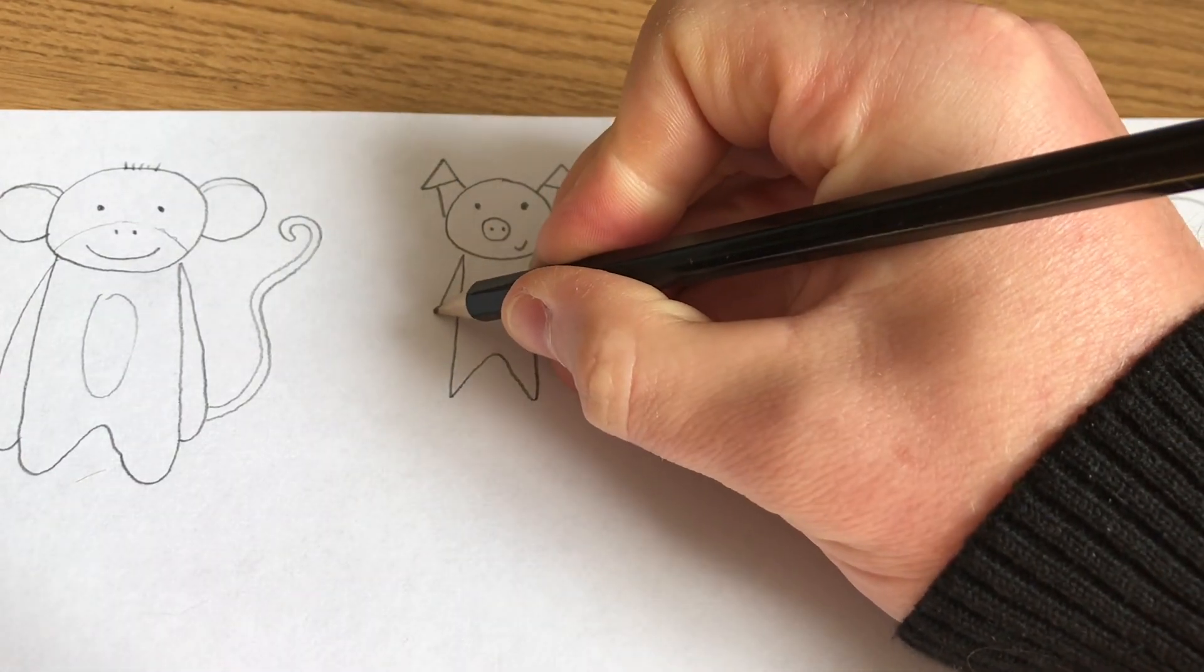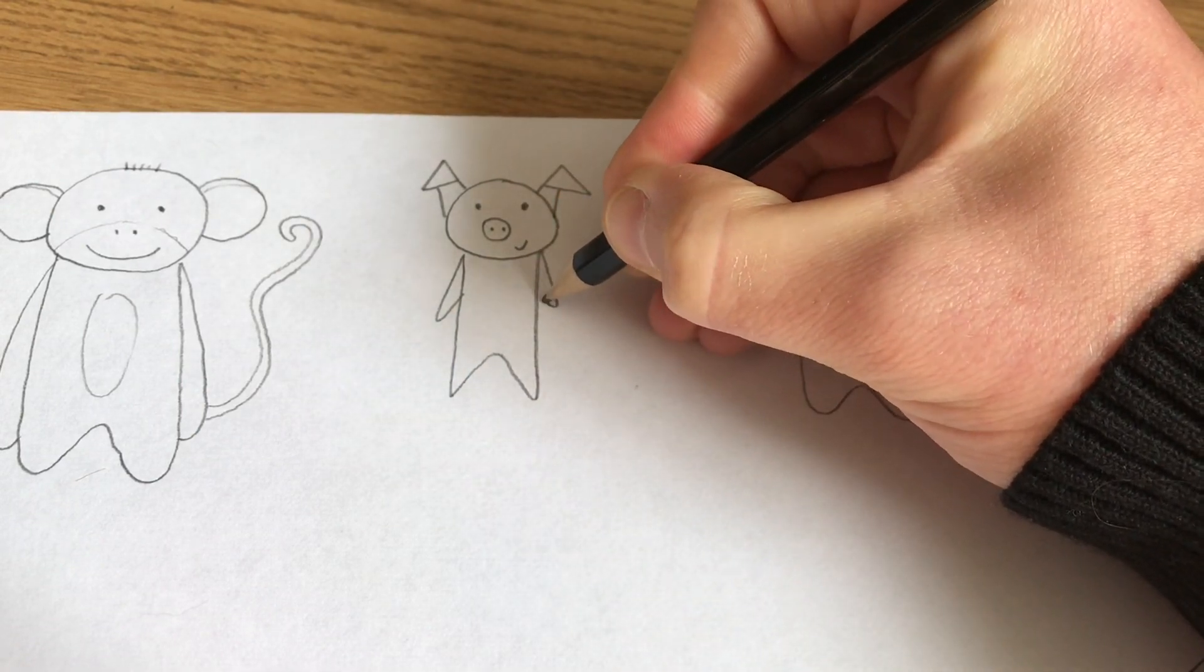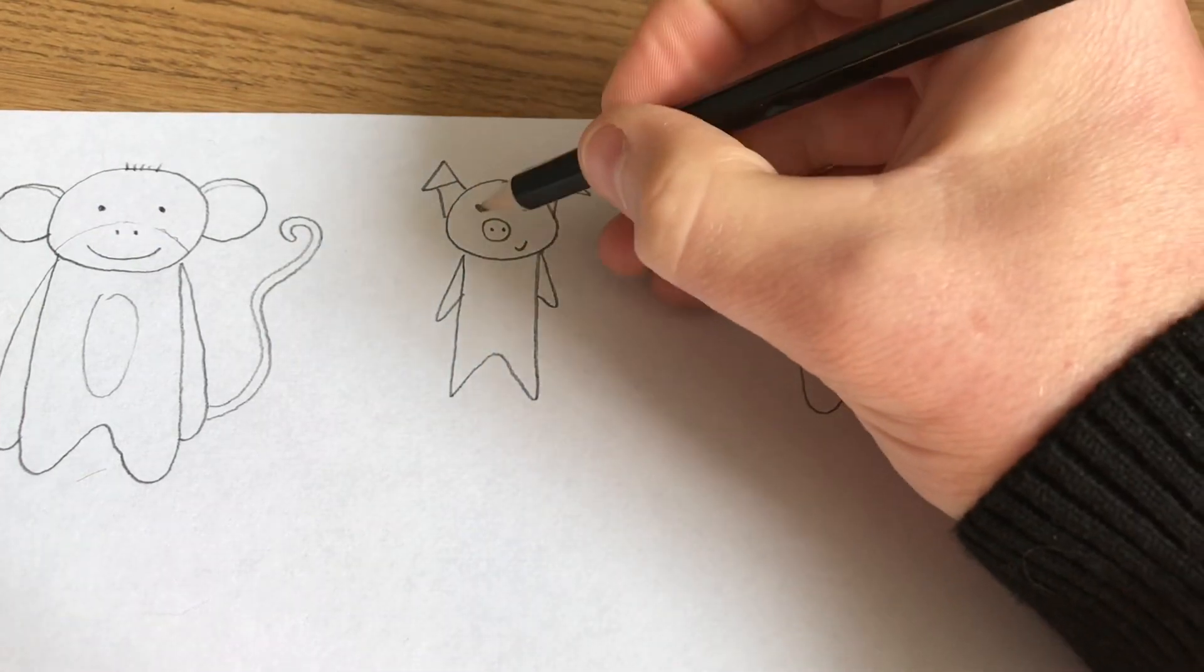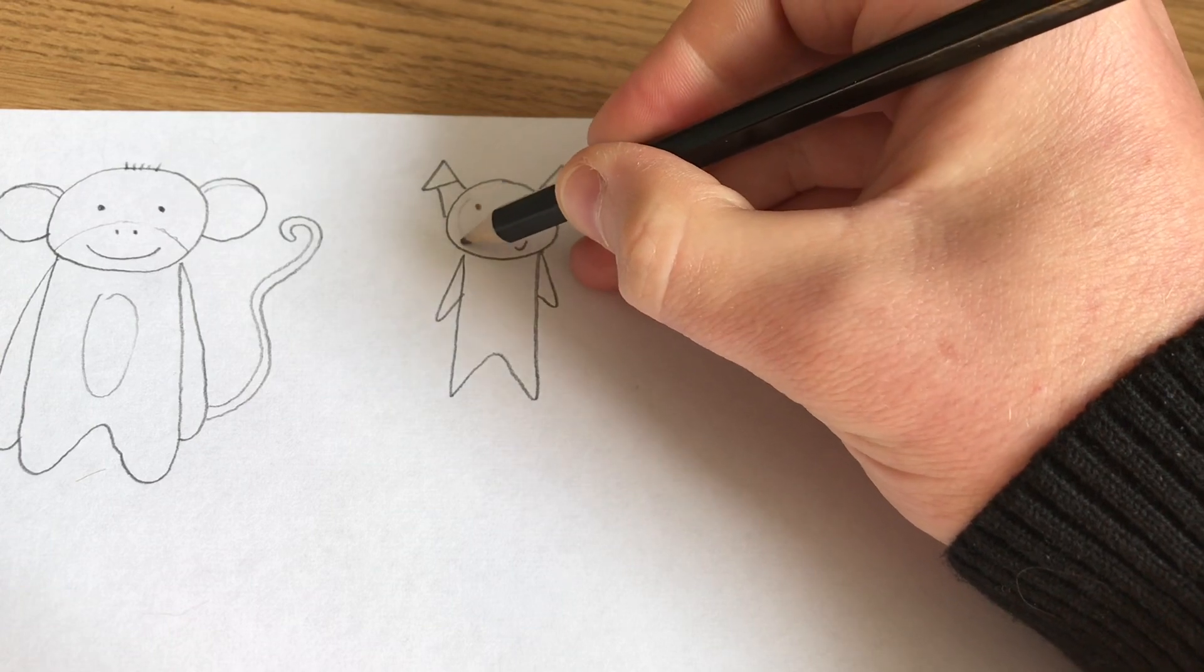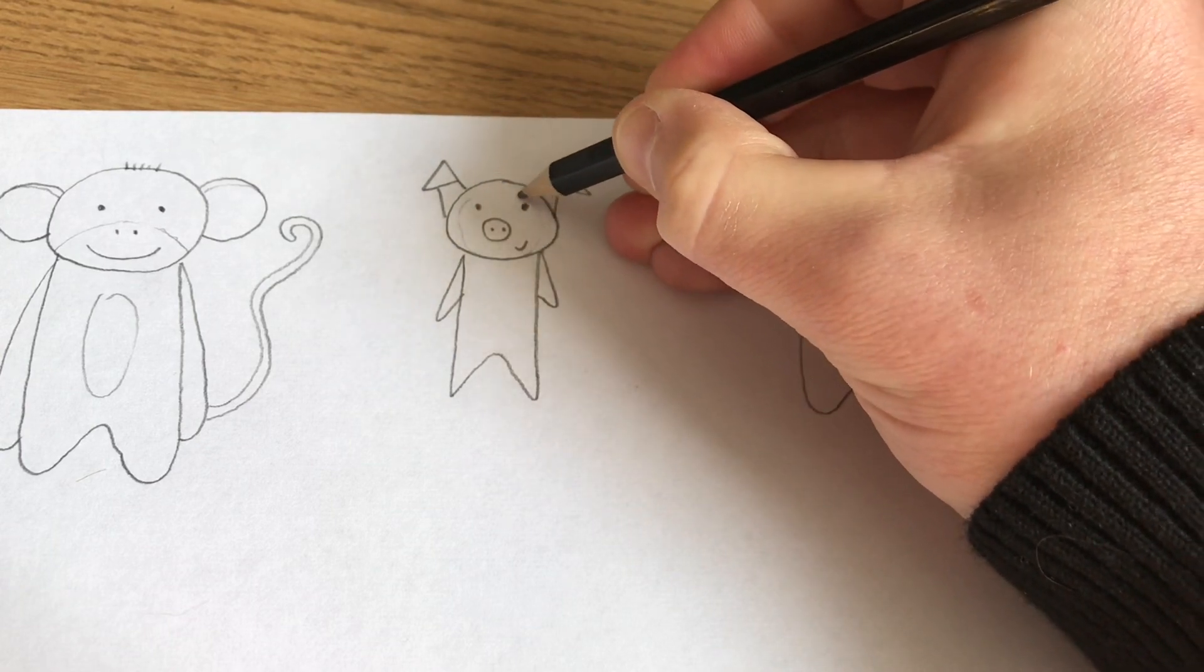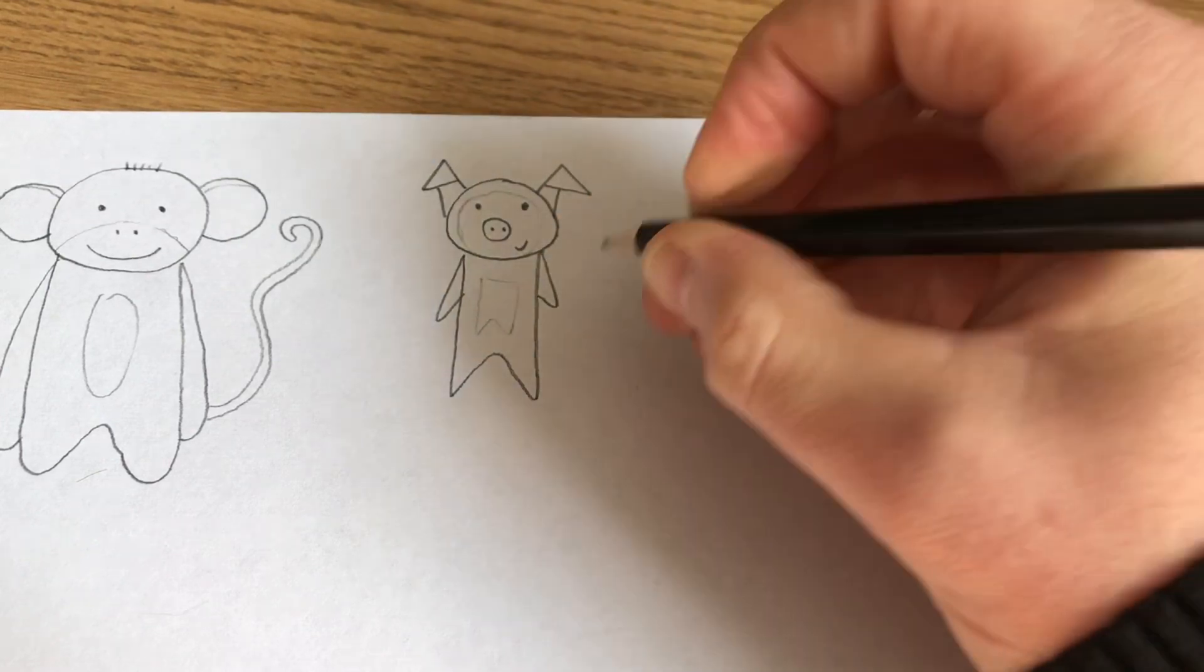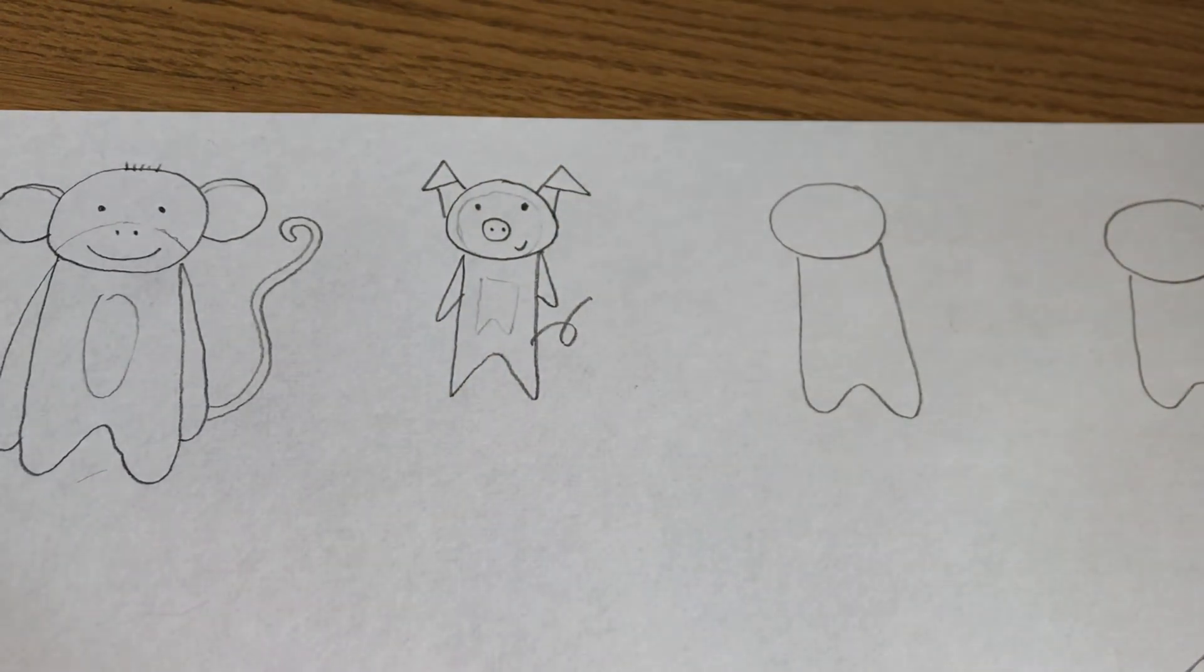Give them some shorter arms this time. And now you don't need much more detail, but again, I'm just going to kind of give it a bit of a loose line around here, just to kind of focus the face a little bit. And maybe a little bit of a tummy. And again, the tail is always a giveaway. Hopefully you can tell that that was supposed to be a pig.